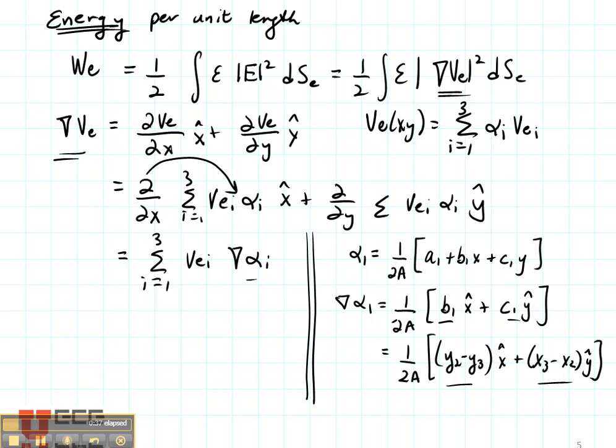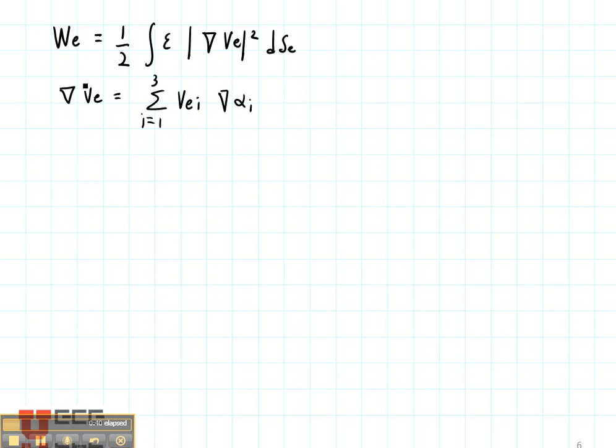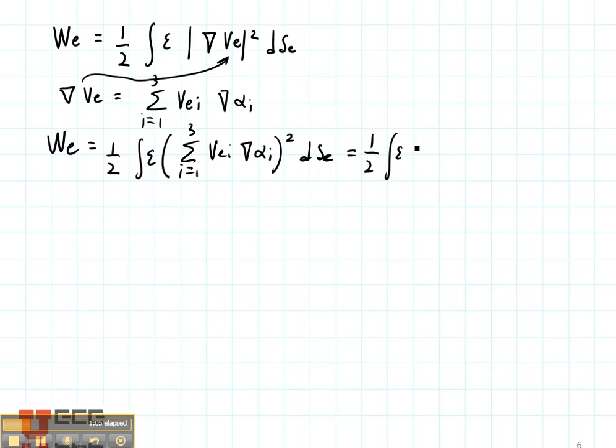So now let's use that to define the energy per unit length. All we're going to do is take this value and substitute it in up here. That's going to give us the elemental energy being 1 half the integral of the sum from I equals 1 to 3 of VEI times the gradient of Alpha I squared DS. Well, now let's break that up into two parts because that's going to make it easier for us to analyze.